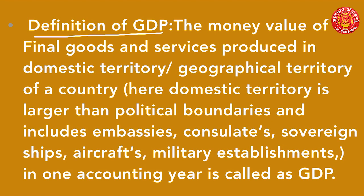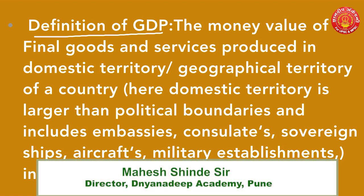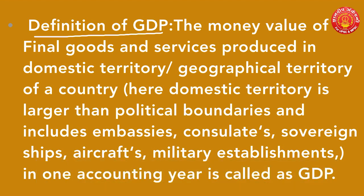Before going into the formal definition, GDP is nothing but the value of total goods and services produced in a country in one accounting year. The total money value of all goods and services produced in the country in one economic year — this total value is called GDP, that is Gross Domestic Product.